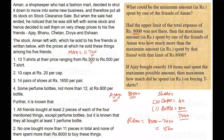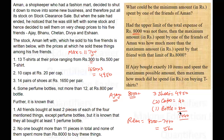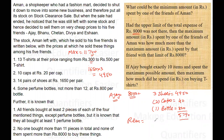Now let's check if he buys three pairs of shoes. With three pairs of shoes at 1650 each, the total amount spent on shoes is 4950. Including two caps at 40 rupees and one perfume at 800 rupees, the total amount spent so far is 5790 rupees. The remaining amount is 8000 minus 5790, which is 2210 rupees.